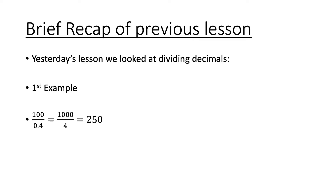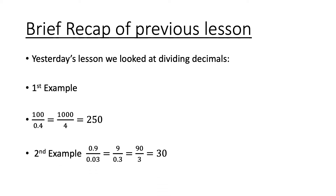A brief recap of the previous lesson from the 10th of July — we looked at dividing decimals. For example, 100 divided by 0.4: to find how many 0.4s go into 100, I multiplied the top and bottom by 10 to remove the decimal point, giving 1000 divided by 4, which equals 250.